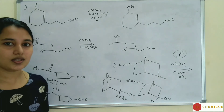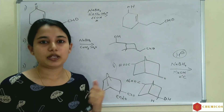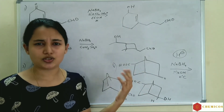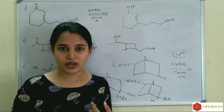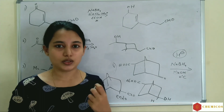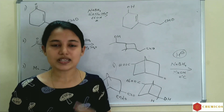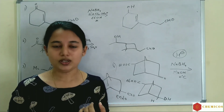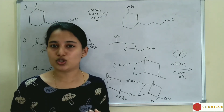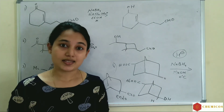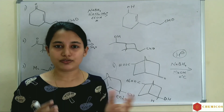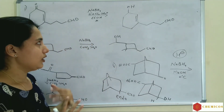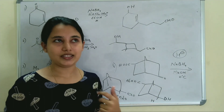In summary: sodium borohydride reduces aldehydes, ketones, and acid chlorides. Lithium aluminum hydride can reduce aldehydes, ketones, acid chlorides, acids, amides, cyanides, nitro groups, and all those functional groups — it is the more powerful reducing agent. Luche reagent is sodium borohydride in the presence of cerium chloride; 1,2-attack is possible, 1,4-attack is eliminated, an allylic alcohol is formed, and the less reactive group (ketone) is attacked preferentially. Thank you.